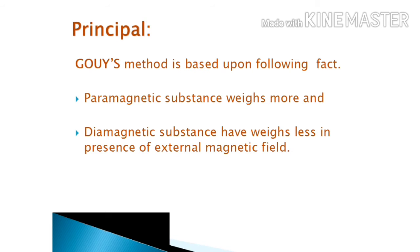This Gouy balance was designed by French scientist L.G. Gouy. Now before learning the principle, there are different types of substances like paramagnetic substance and diamagnetic substance.